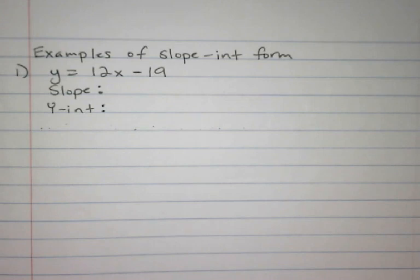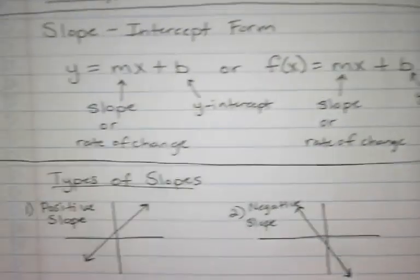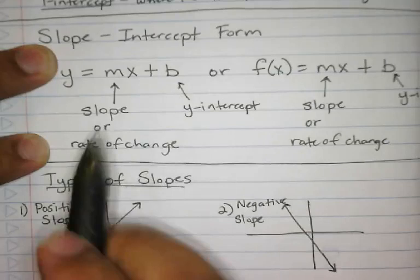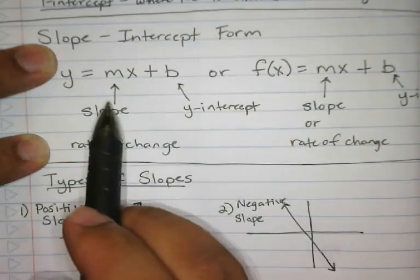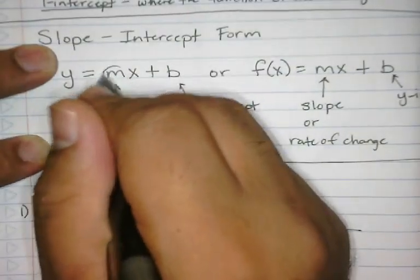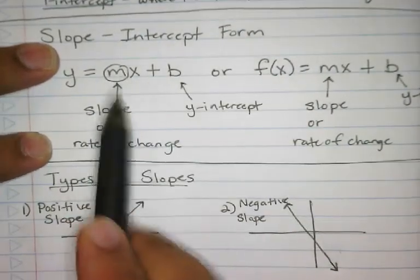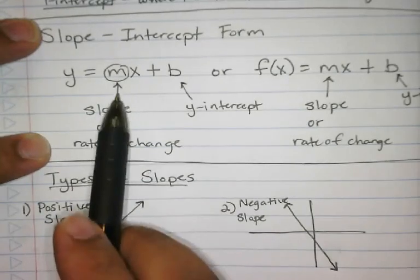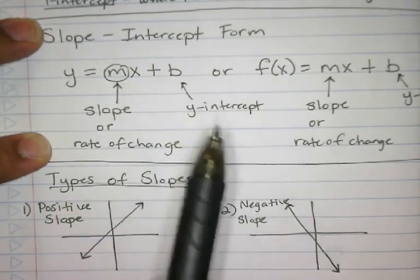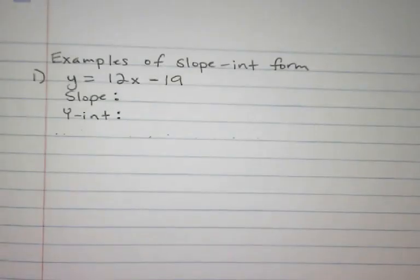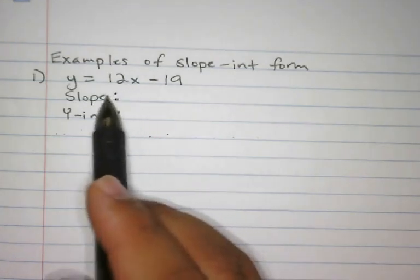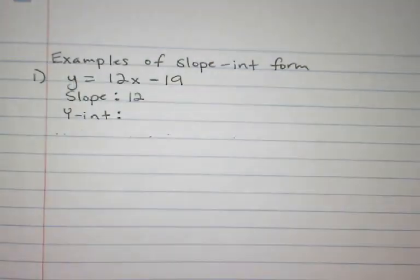The slope is only the m — it wouldn't be 12x, just 12. So over here, the slope would be just 12, not 12x; x is its own variable. For the y-intercept, we look back at slope-intercept form — it has plus b, but in our example it's minus 19, so the y-intercept would be negative 19.